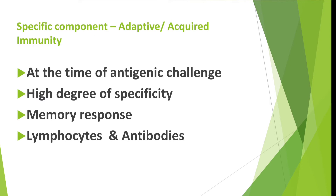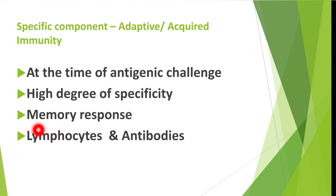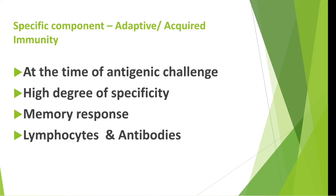Note that innate immunity is present before the onset of an infection, but adaptive immunity comes into play only after an antigenic challenge or infection. The adaptive immunity responds to the challenge with a high degree of specificity and it also has the property of memory. Normally, the adaptive response against an antigen occurs within 5 to 6 days after the initial exposure to that antigen. And the exposure to the same antigen in future results in the memory response.